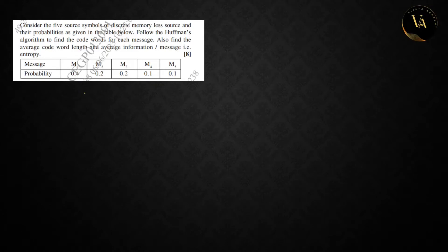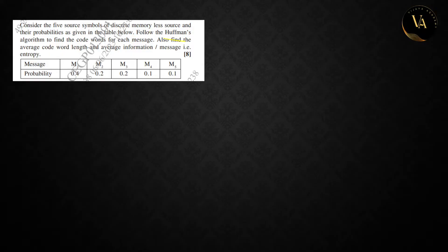Hello everyone, welcome back to our channel. Now let's look at our digital communication subject's next numerical on Huffman coding. We consider five source symbols M1 to M5 from a discrete memoryless source with given probabilities. We will follow the Huffman algorithm to find code words, average code length, and average information or entropy.